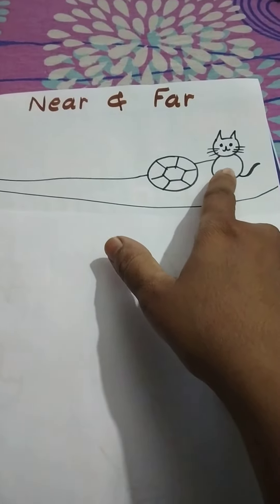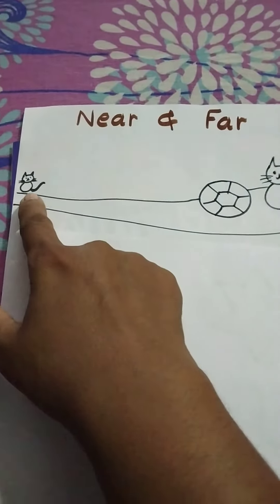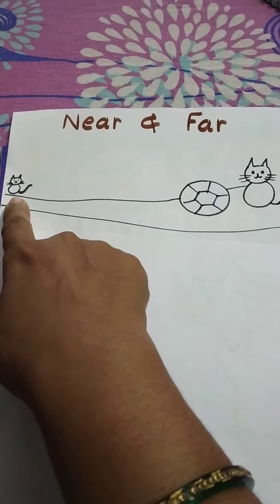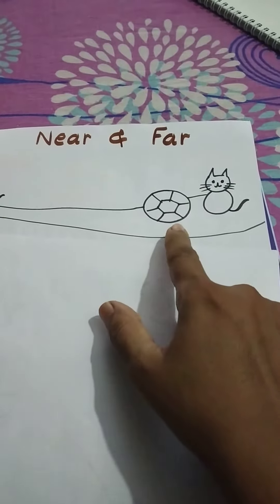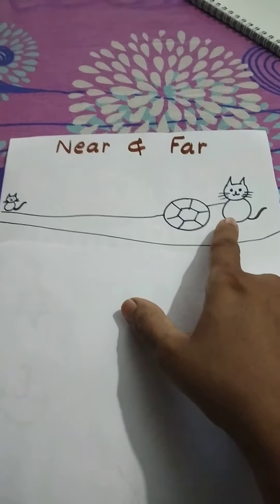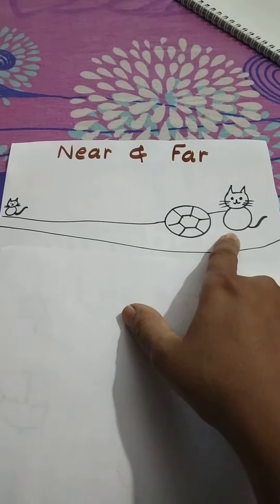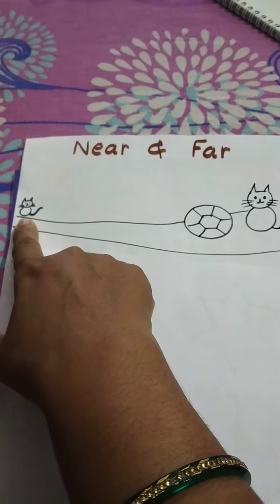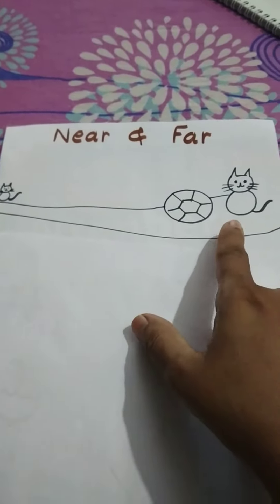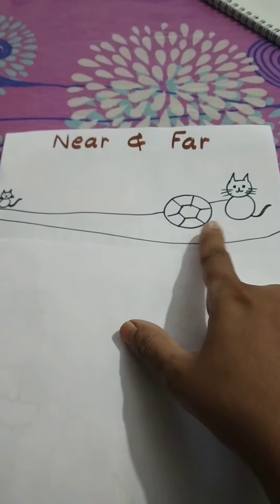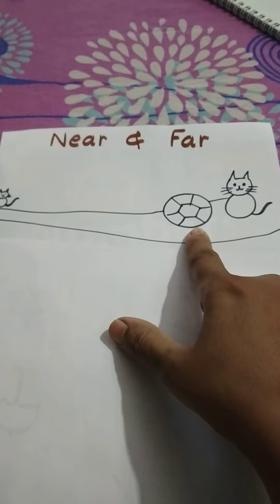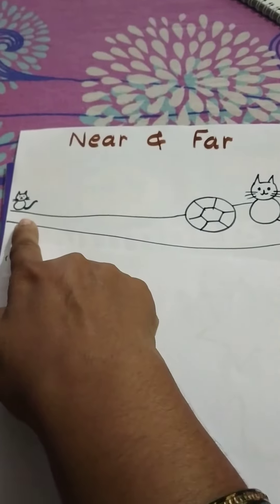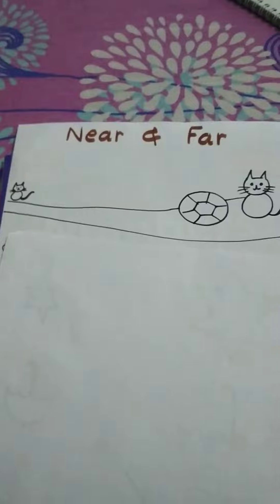She is near. This cat is near. And this cat is far from the ball. Jo pass ki cheez hoti hai, uske liye ham near word use karte hai. Jo cheez ham se door hoti hai, uske liye ham far word use karte hai. Ball ki paas ye jo cat hai, it means the cat is near the ball. And this cat is far from the ball.